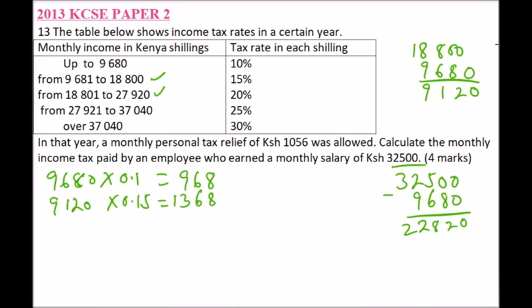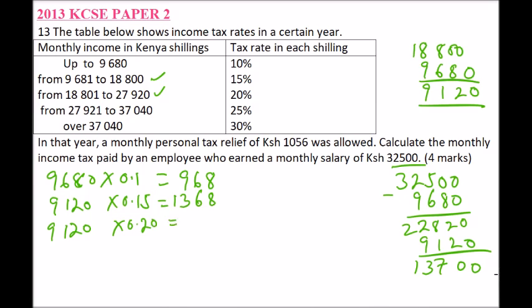After subtracting the second bracket, we find the remaining balance. We subtract 9,120 from that balance. The next bracket amount is again 9,120, taxed at 20%, which is 0.20. Multiplying 9,120 by 0.20 gives 1,824.